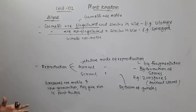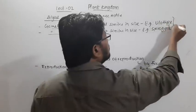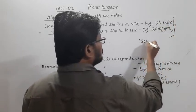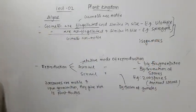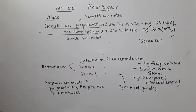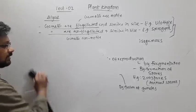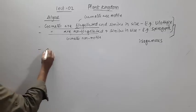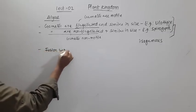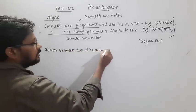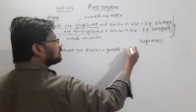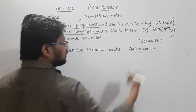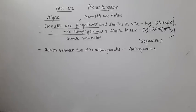When there is fusion between two gametes that are similar in size, we call it isogamy. Fusion between two dissimilar gametes is a condition called anisogamy. An example of anisogamy is seen in the alga Ulodina.